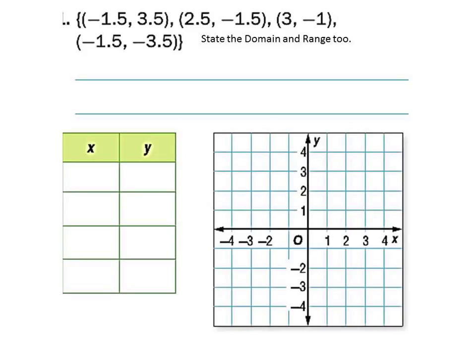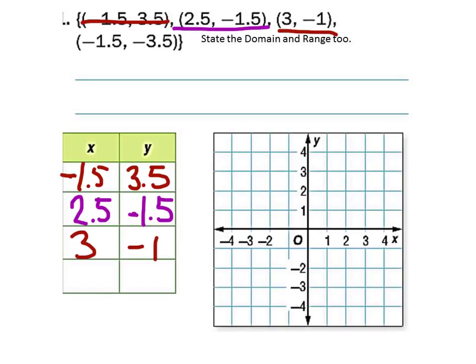Here this is giving us four different coordinate pairs. Says to state the domain and range as well. What we need to do is put these into a table. So on this first one, what's our first point? Well it's negative 1.5, 3.5. Let's do this next one, so the x coordinate is 2.5, y is negative 1.5. This next one is 3, negative 1. The next one is negative 1.5 and negative 3.5.